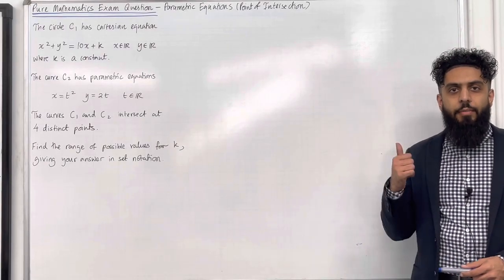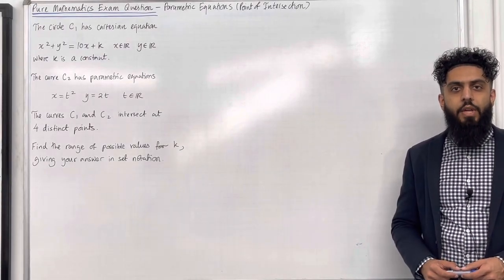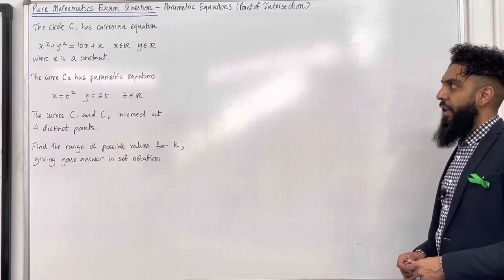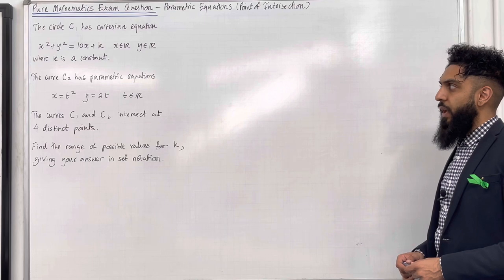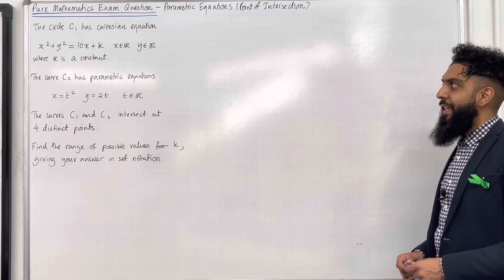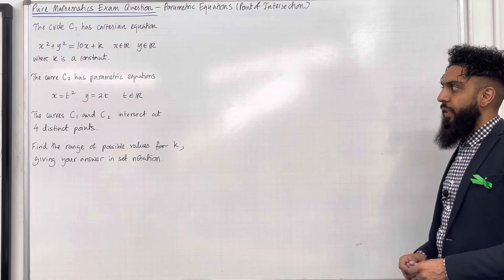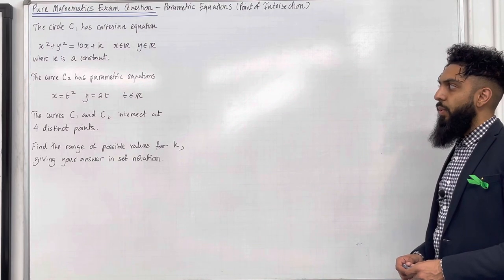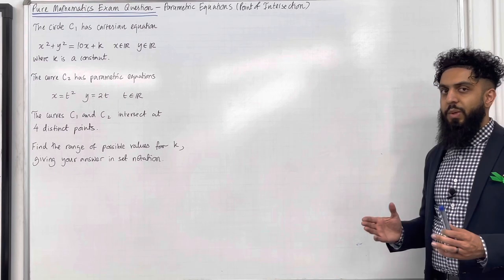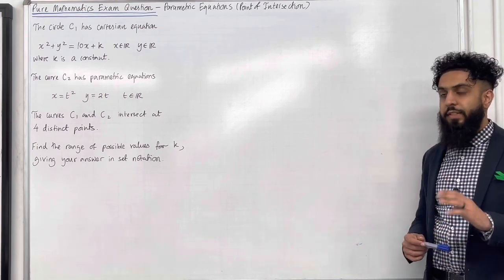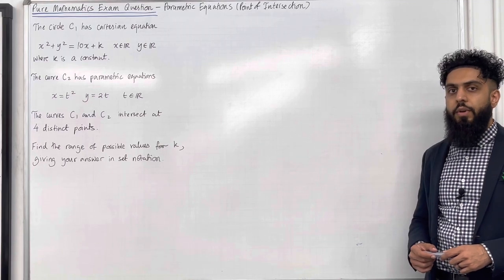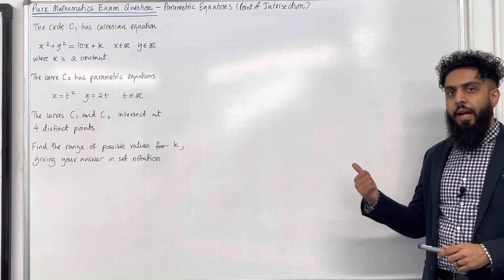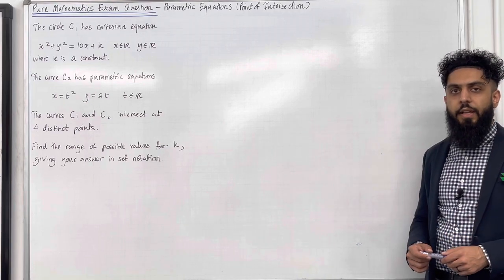Welcome back. In this video I'll be looking at a Pure Mathematics exam question on parametric equations: point of intersection. Here is the exam question. The circle C1 has Cartesian equation x squared plus y squared equals 10x plus k, where k is a constant. The curve C2 has parametric equations x equals t squared, y equals 2t, where t is any real number. C1 and C2 intersect at four distinct points. Find the range of possible values for k. Give your answer in set notation. Please pause the video and have a go at this exam question, then play the video.